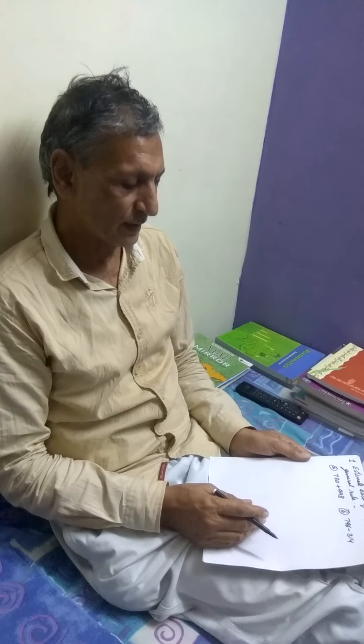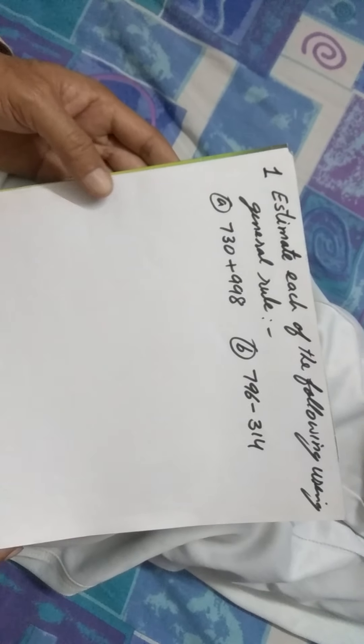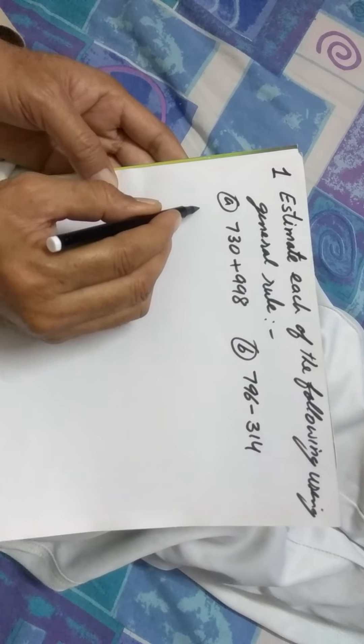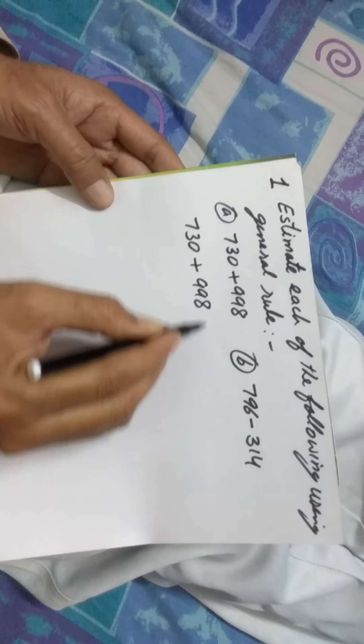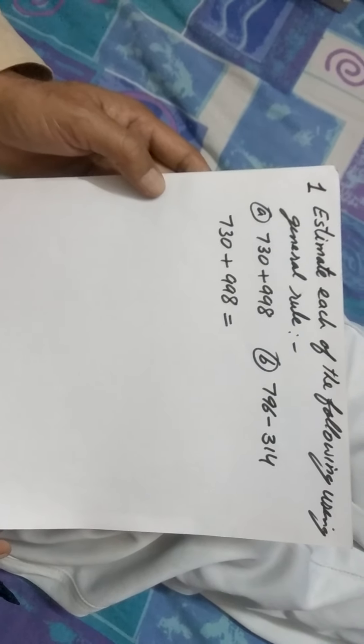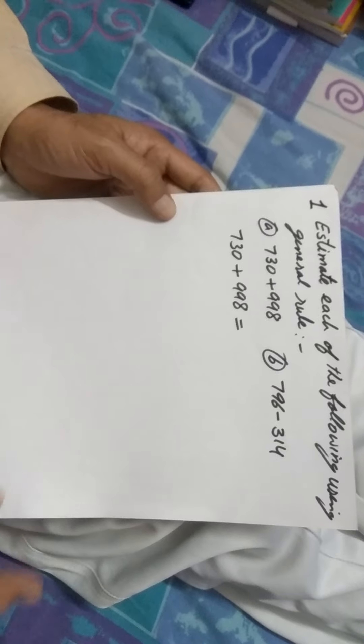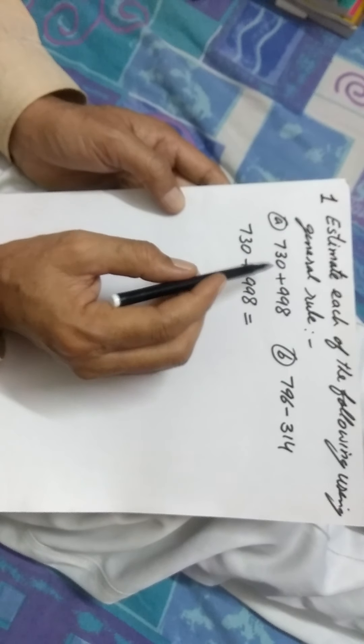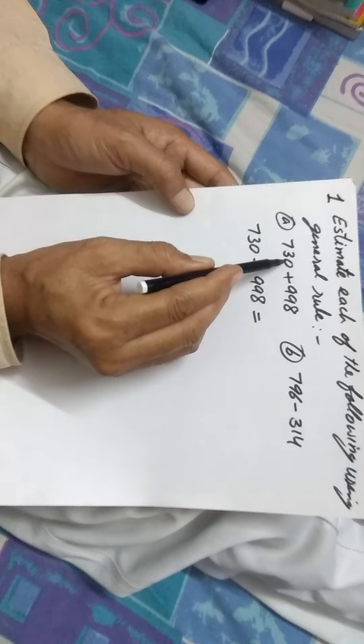So, I would like to tell you these two sums. First, let's take up: estimate each of the following using general rule. Let's take up 730 plus 998 can be estimated. See, the mistakes you have done is you did not estimate both the numbers. The fact of the matter is, some of you have estimated only one number, the second one, whereas you were to estimate both.